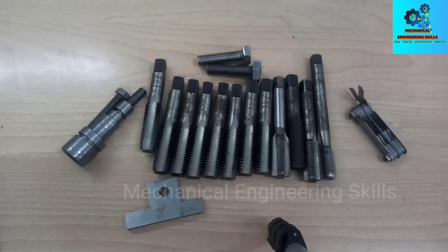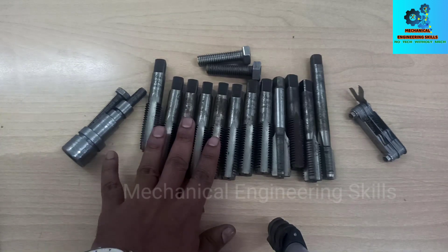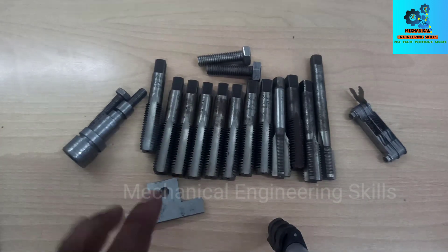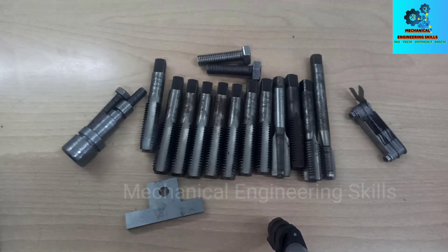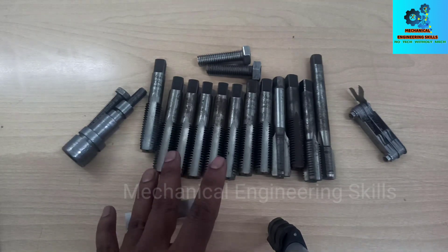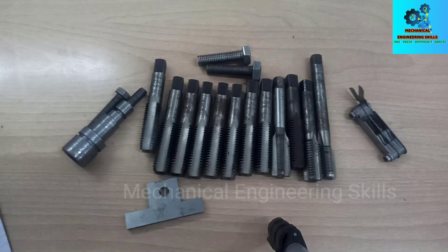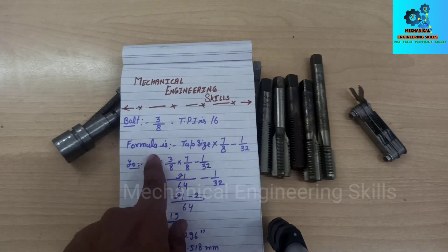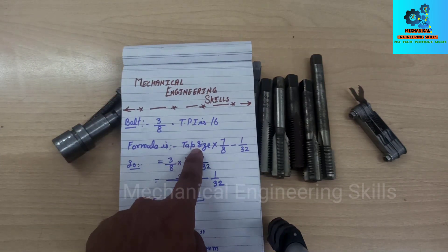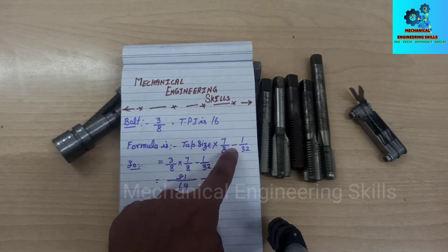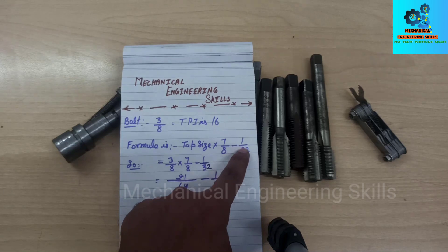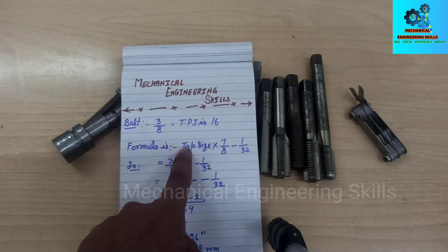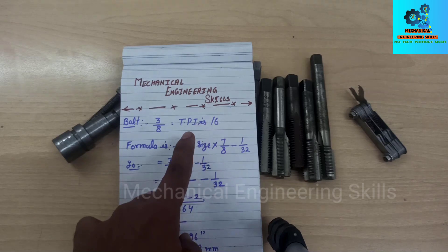In our last video we discussed metric tap drill size calculation. In this video we will discuss inches tap drill size in mm. The formula for inches tap drill size is: Drill Size = Tap Size × (7/8) − (1/32).